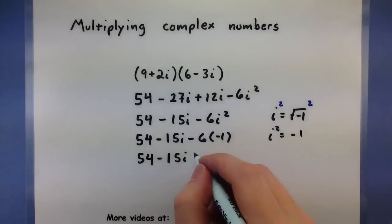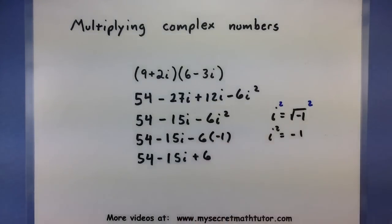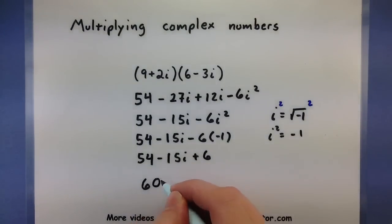Or this is positive 6 since negative 6 times negative 1 is positive 6. Now I can finally combine that with my 54 out front, leaving me with 60 minus 15i.